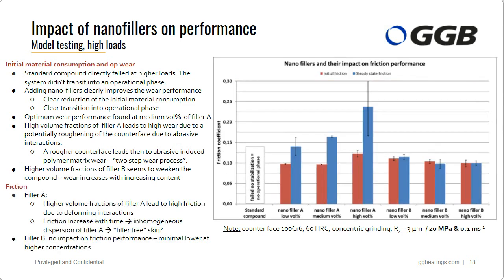The next diagram shows the impact on friction at high loads. An obvious friction increase occurs when using high volume fractions of Filler A. We also see that friction increases over time — low starting friction and higher friction in the operational performance window — which can be an indicator of inhomogeneous dispersion of Filler A. For Filler B, again, no real impact on friction — minimal lower friction level at higher volume fractions.